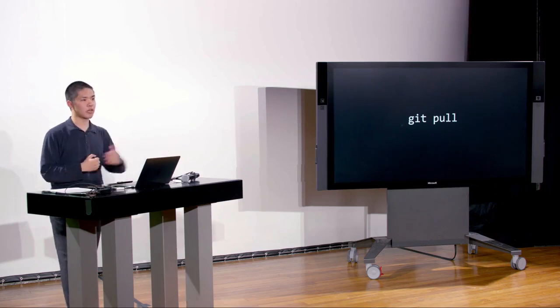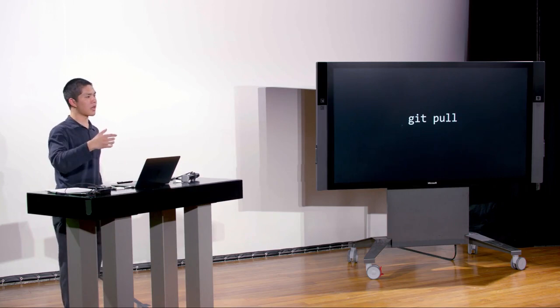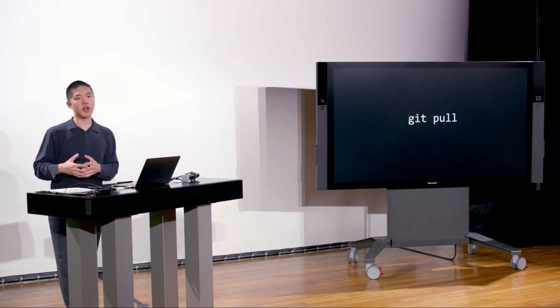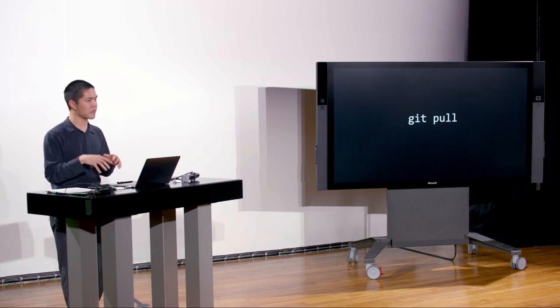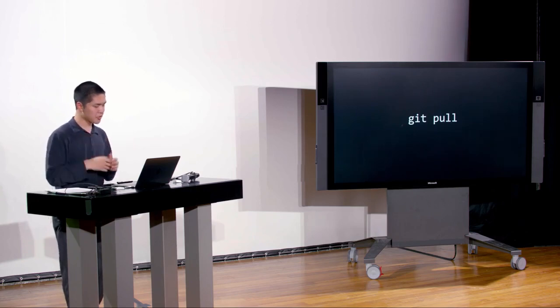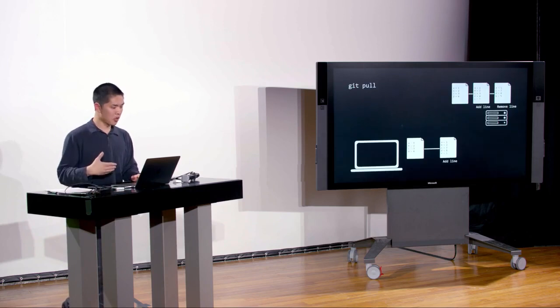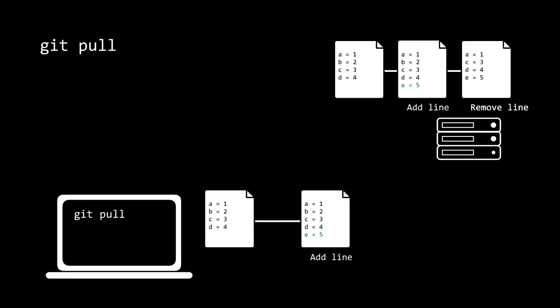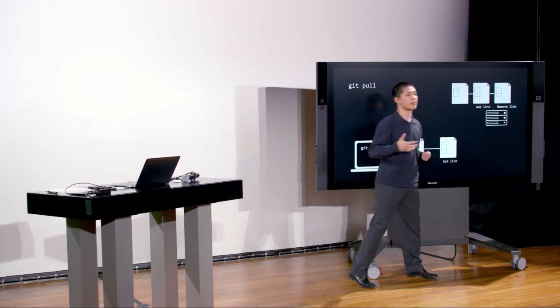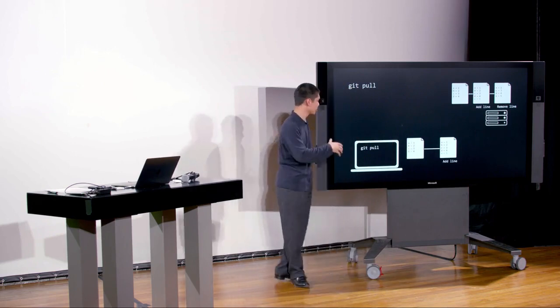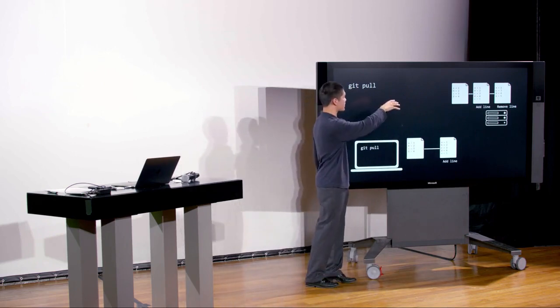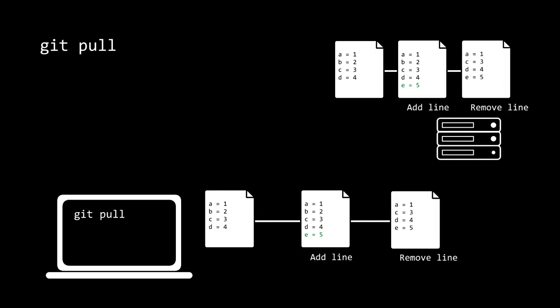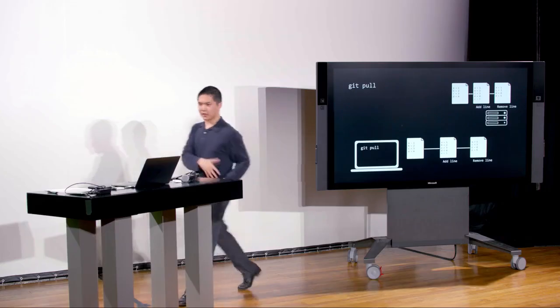The inverse of git push is git pull. If someone else has made changes to your repository and pushed them to GitHub, you can download the latest version using git pull. When you run git pull, any latest changes on the remote server are downloaded to your computer so you have a working copy of the entire history of the project. For example, if a change is made directly on GitHub's web interface — adding 'Hello Again' — and you then run git pull locally, Git downloads that change, showing hello.html was updated with one insertion and one deletion.